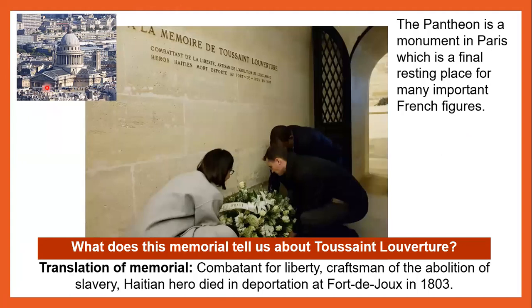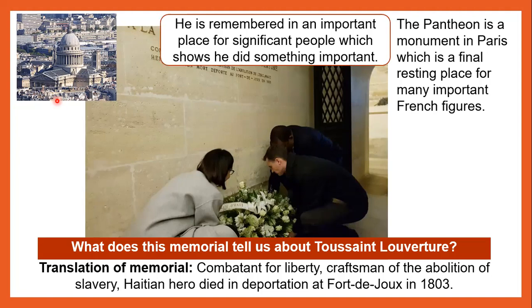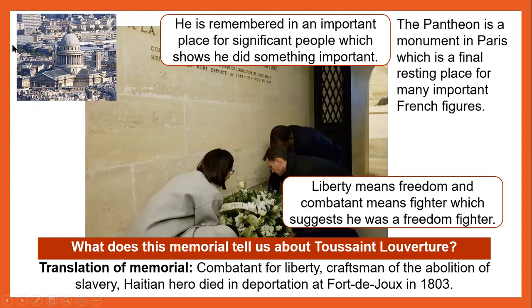Here is an image of the Panthéon, which is an important monument in Paris and the final resting place for many important French figures. What does this memorial tell us about Toussaint Louverture? The translation of the memorial is: Combatant for Liberty, Craftsman of the Abolition of Slavery, Haitian hero, died in deportation at Port de Jour in 1803. He is remembered in an important place for significant people, which shows he did something very important. Liberty means freedom, and combatant means fighter, which suggests he was a freedom fighter.